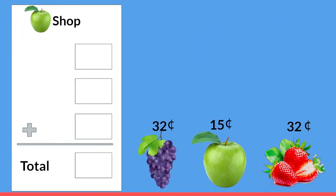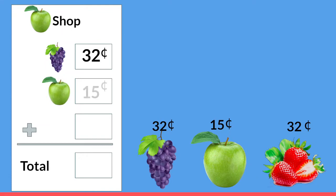Let's try this again with some more yummy fruit. I'm going to buy grapes again for thirty-two cents. And this time I think I'm craving a green apple — a Granny Smith apple — for fifteen cents. And then look at those yummy strawberries for thirty-two cents.